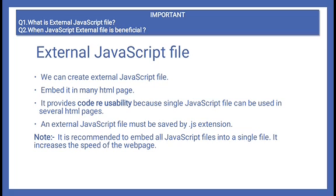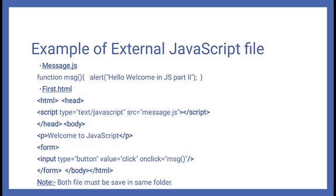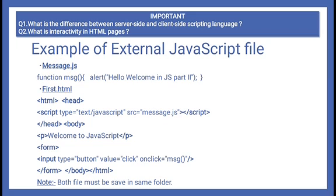This is the benefit of using an external file. In the example, we have message.js and first.html. In message.js, we have a function called 'message' which is printing 'Hello, welcome in JS part 2' inside an alert box. Inside first.html, we have added a JavaScript script tag with the src attribute pointing to message.js — embedding it. On the button's click event, we called this 'message' function. That is how the external file is linked and used.